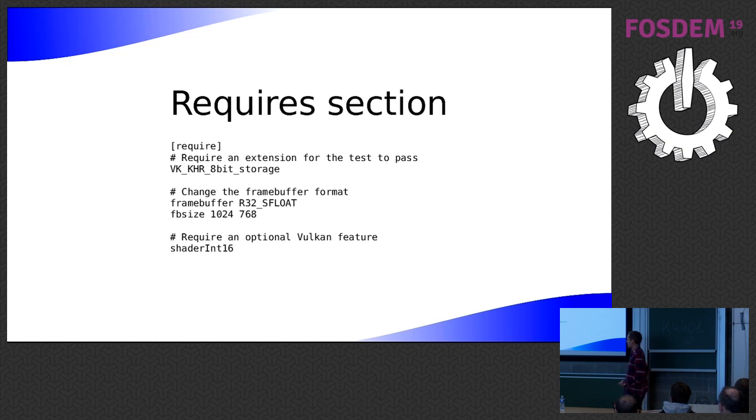So another section, there's a require section. So this is also available in Piglet Shader Runner. So you can just list an extension, for example, and when the VK runner runs the test, it will check that that extension's available on the driver. And if it's not available, then the test will report skipped. So Piglet Shader Runner has already a convention to report either passed, skipped, or fail. So VK runner copies the same convention. So if the extension isn't available, then it's skipped.